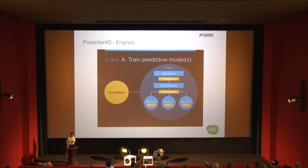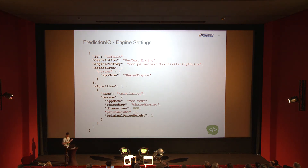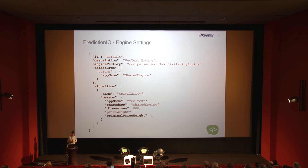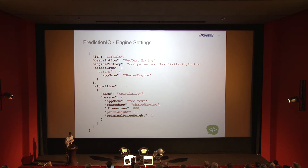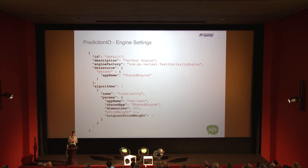One thing to show quickly: engines have an engine.json configuration file where you wire things together. In this application we have a shared data source across engines — everything goes into one source and each engine extracts what it needs. Further down in the config you find params where you can tweak keys, like the number of dimensions or whether price should be weighted more heavily than other dimensions.